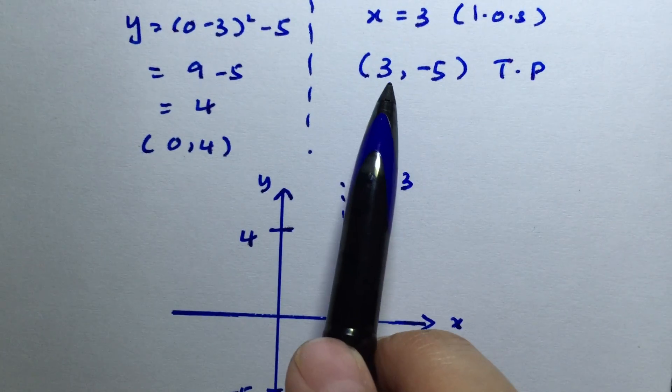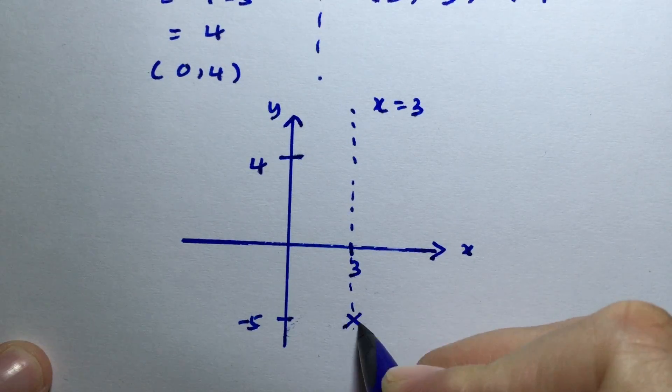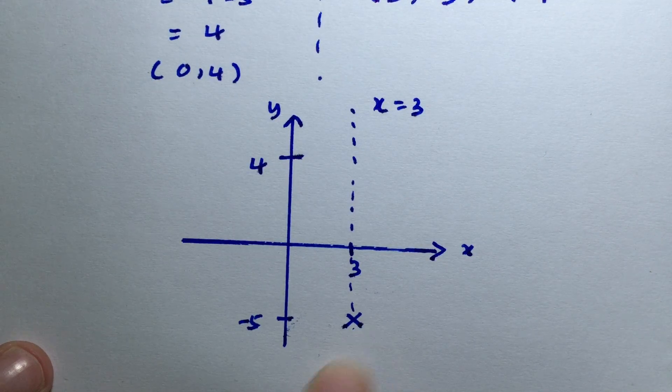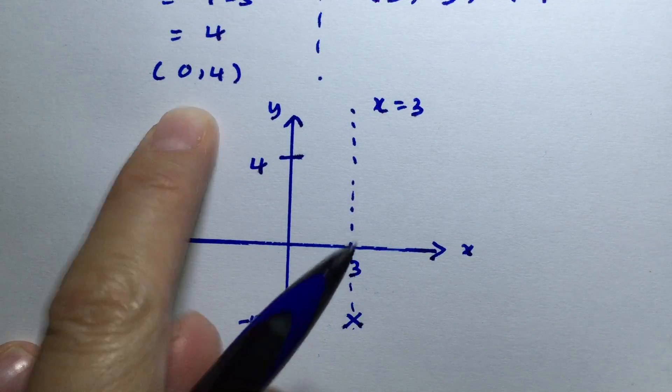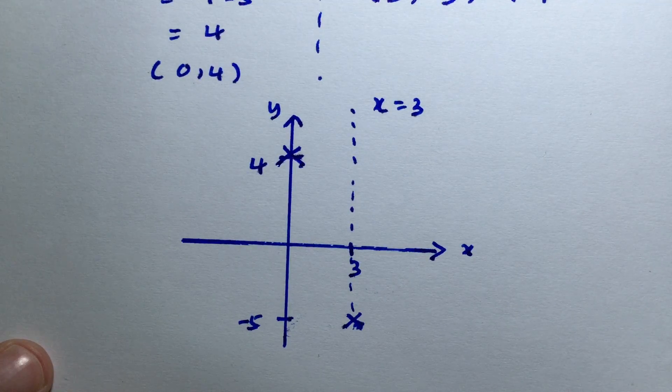Our turning point is at (3, -5). I'll mark a cross here for the lowest point. It also passes through (0, 4), so I'll mark another cross there.